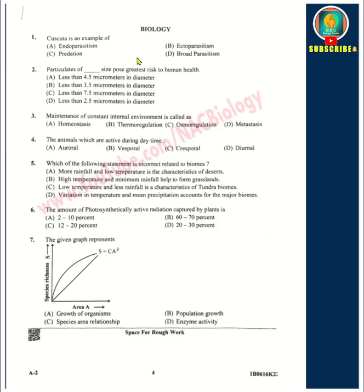First question: Kaskuta is an example of ectoparasitism. Second question: Particulates of what size pose the greatest risk to human health? The answer is option D — less than 2.5 micrometers in diameter. This is actually the A2 series paper, so the options vary across series — don't get confused.